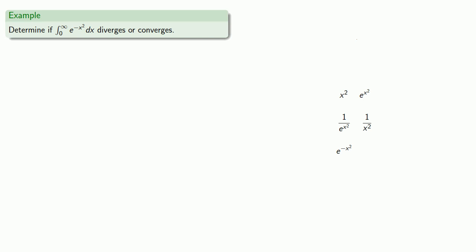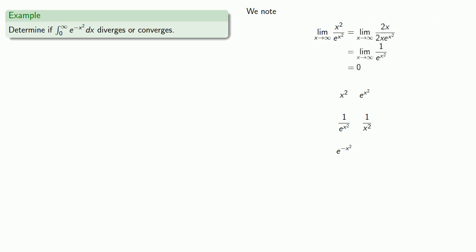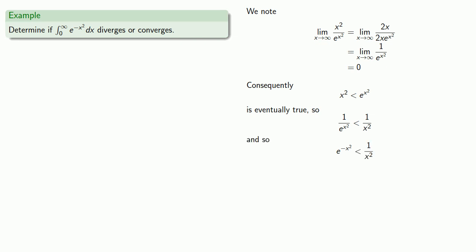One way to do this is to look at the ratio between the two expressions. Since we really hope that x² is the smaller expression, let's look at the ratio of x² over e^(x²). We'll take the limit as x goes to infinity of this ratio, and this is good for a L'Hôpital's visit. We find that the limit as x goes to infinity is 0. Consequently, x² < e^(x²) is eventually true, and so their reciprocals will have the same inequality, giving us e^(−x²) < 1/x² eventually.